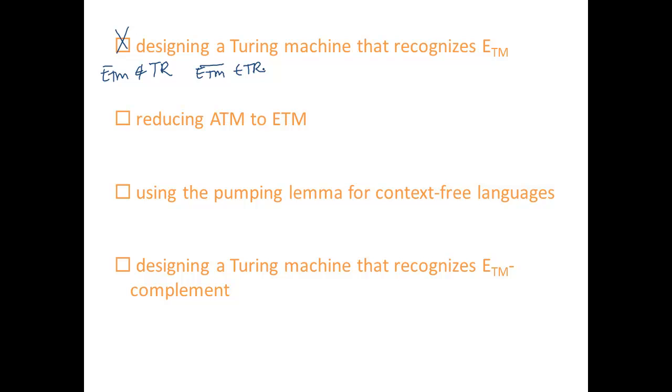First of all, you couldn't design this Turing machine that recognizes E_TM anyway. More than that, some Turing recognizable languages are decidable and some are undecidable. For example, A_TM is undecidable and it's Turing recognizable.